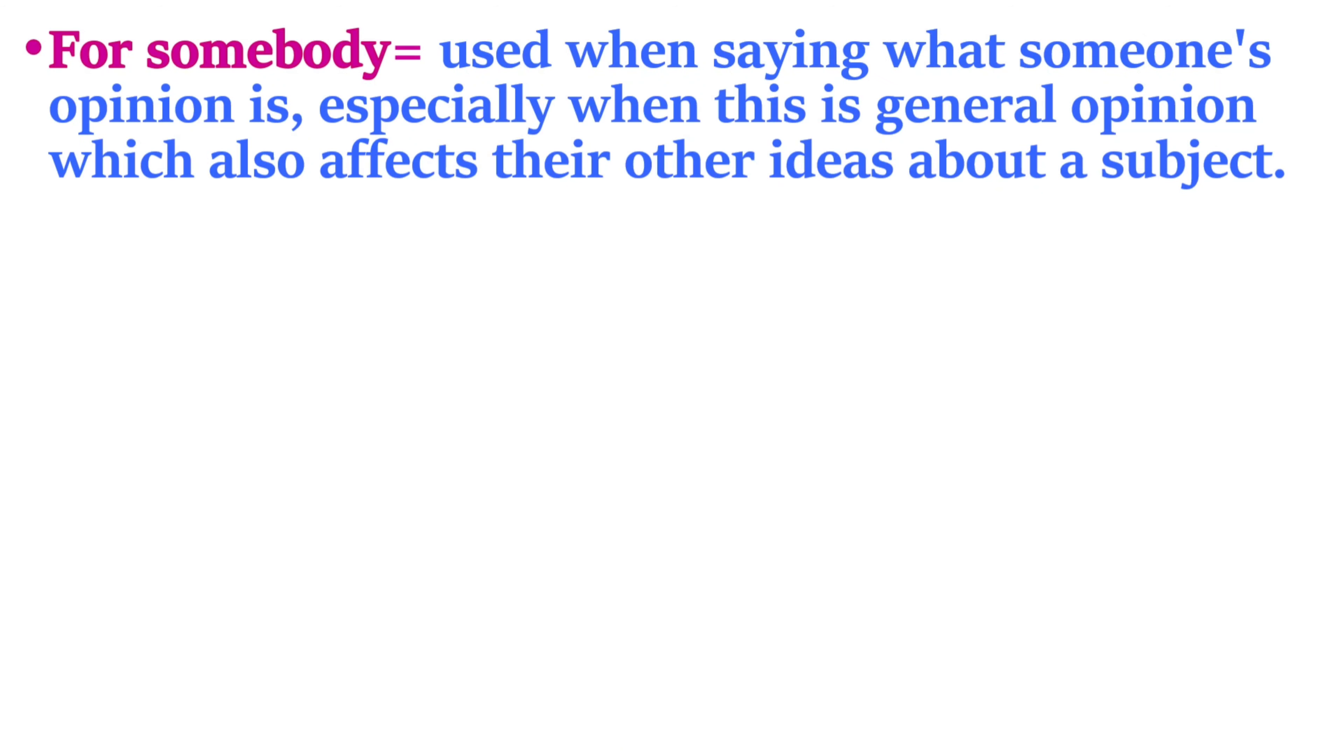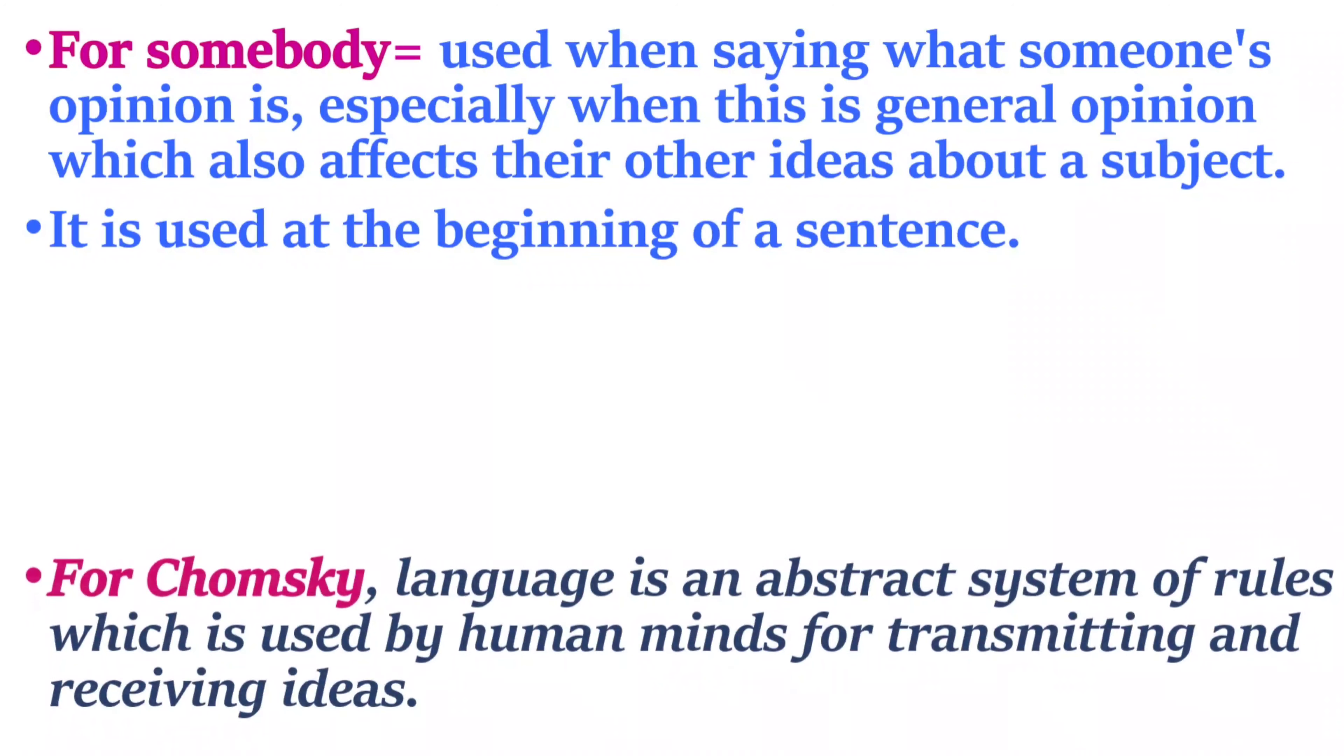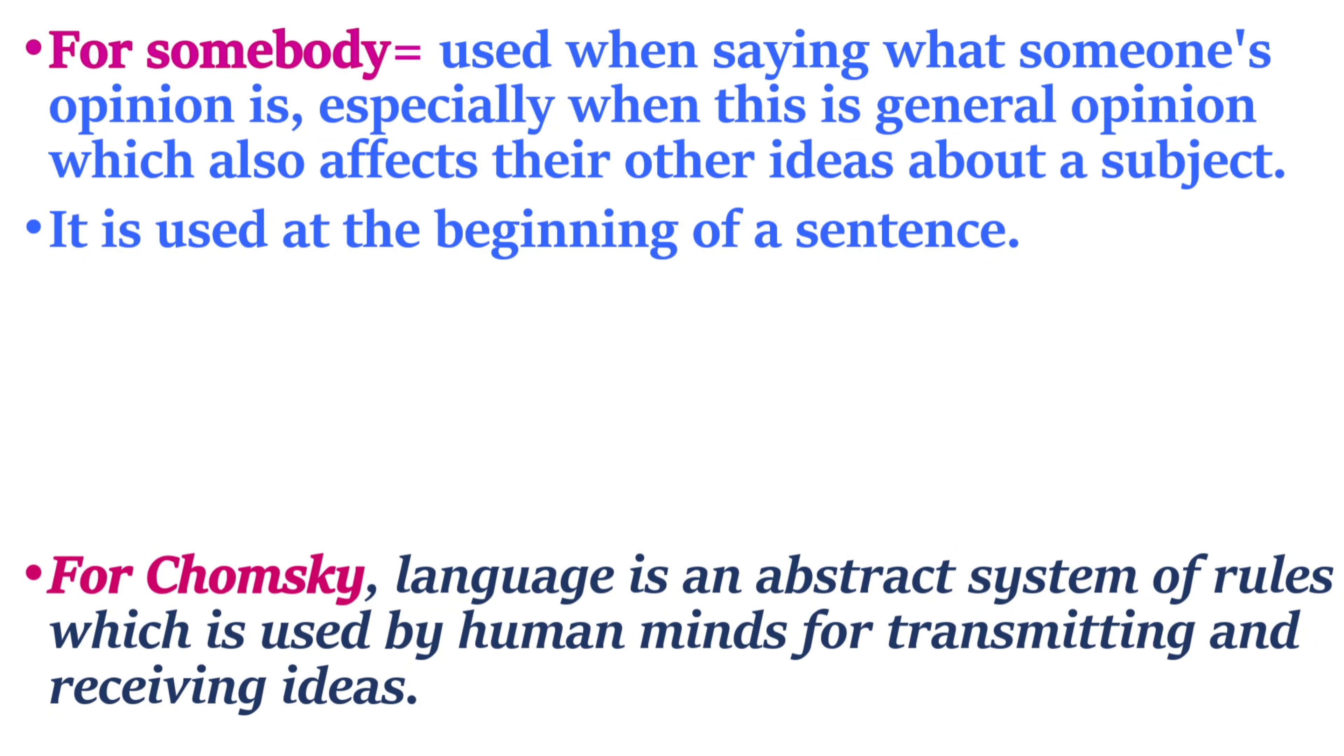'For somebody' is used when saying what someone's opinion is, especially when this is general opinion which also affects their other ideas about a subject. It is used at the beginning of a sentence. For Chomsky, language is an abstract system of rules which is used by human minds for transmitting and receiving ideas.